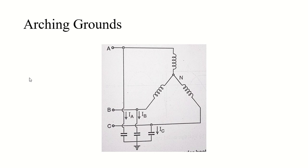Hello dear students, welcome back to the channel and welcome back to this playlist in which we are discussing about corona, overvoltage, and transients in power systems in detail. We have discussed about corona and overvoltage in previous videos, and recently we started discussing about transients in the power system. In the previous class we saw what happens when a transient gets applied on a simple RL circuit, and then we saw what happens when an alternator goes through a short circuit condition.